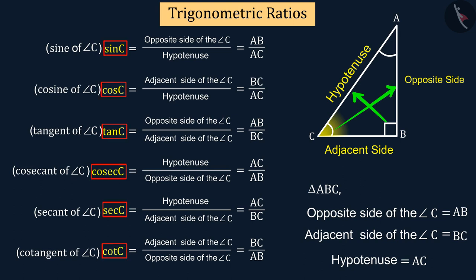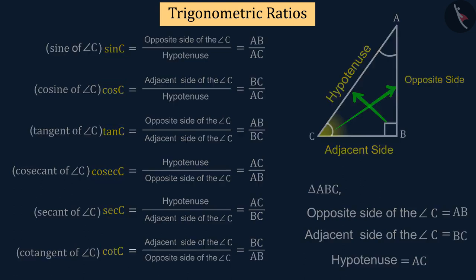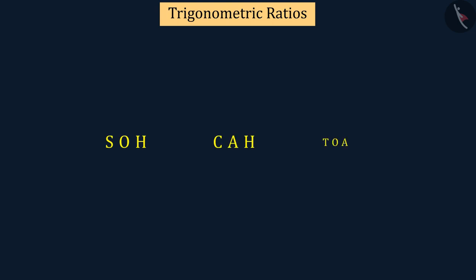These are known as trigonometric ratios of angle C. In an easier way, you can remember these trigonometric ratios like SOH, CAH, TOA, which we can write like this. Wherein SOH...